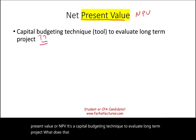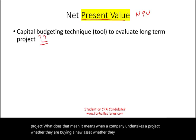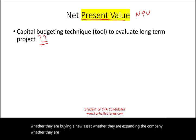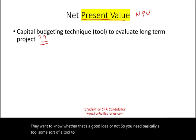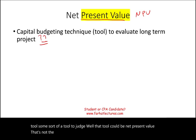It means when a company undertakes a project — whether they are buying a new asset, expanding the company, or undergoing a major advertising campaign — they want to know whether that's a good idea or not. So you need a tool to judge, and that tool could be net present value. That's not the only tool, but it could be one of the tools.